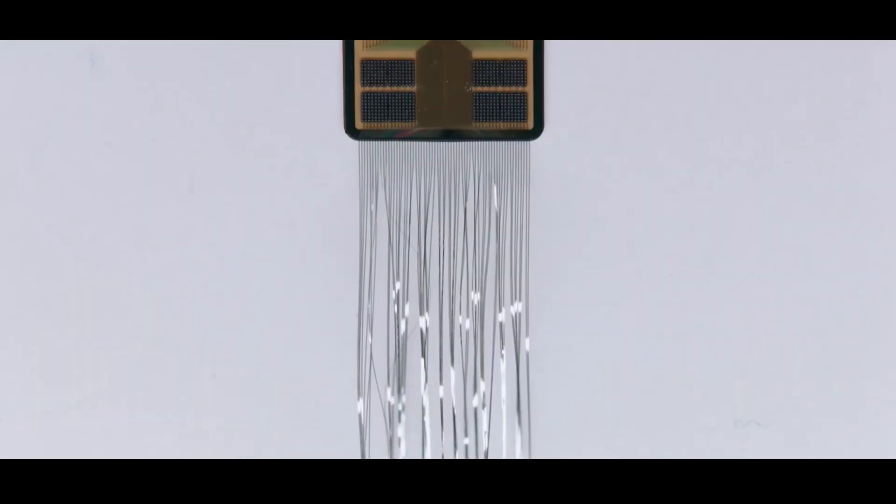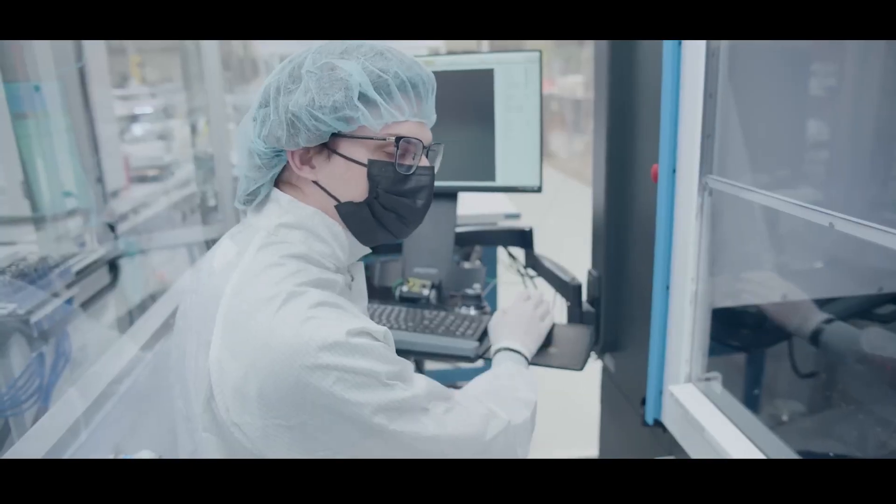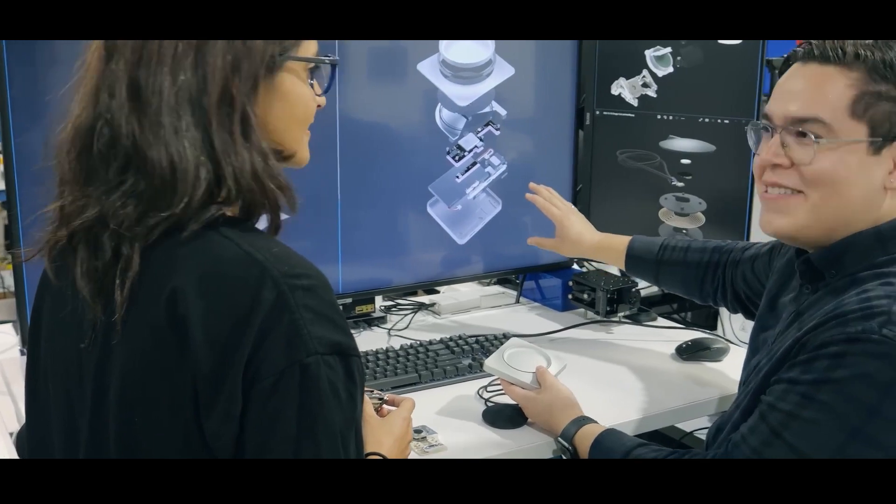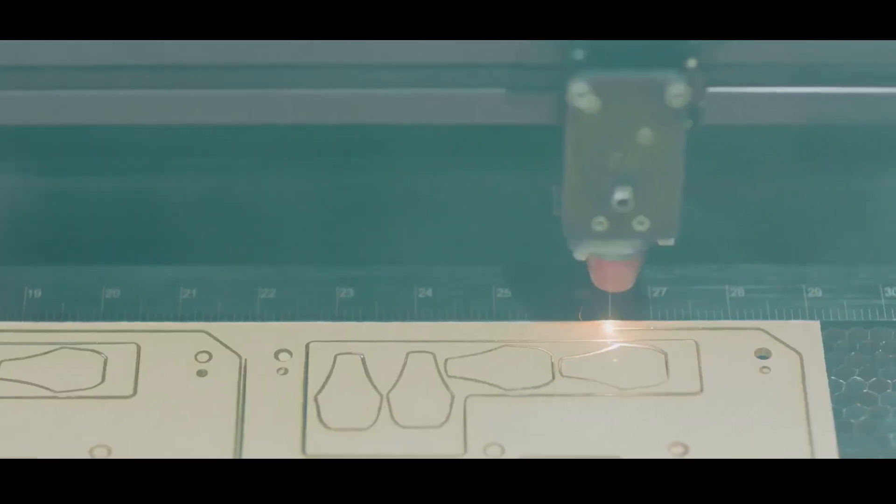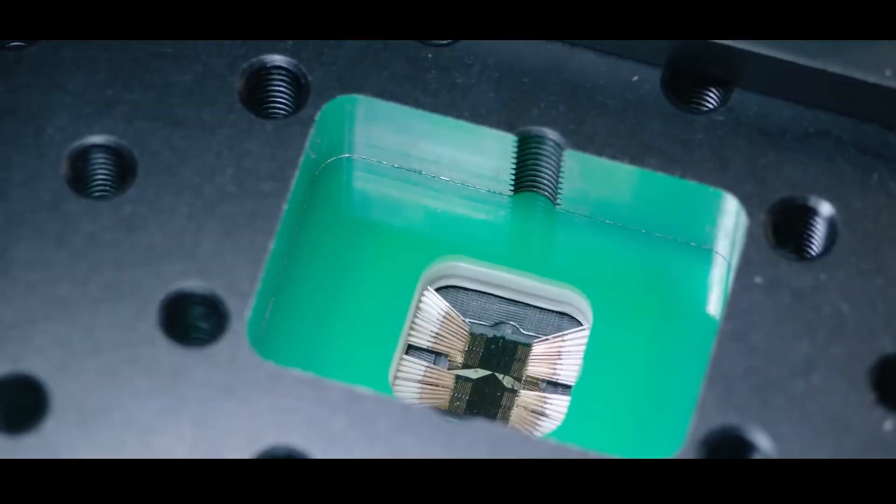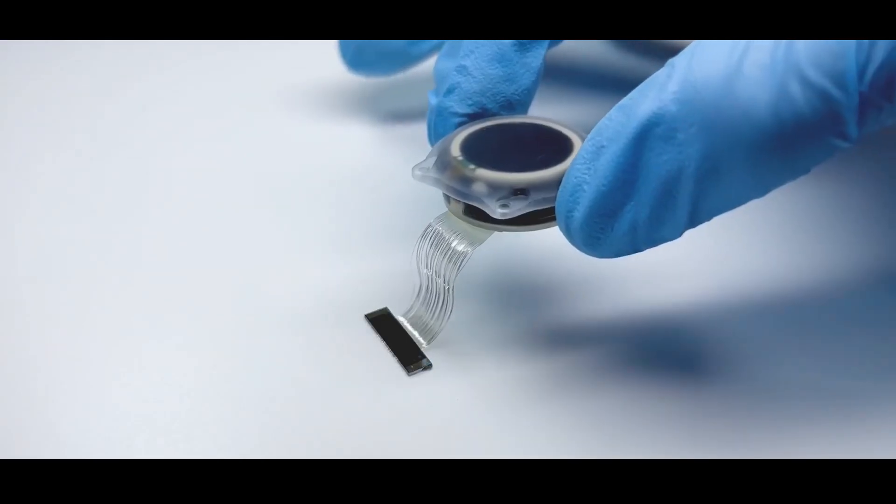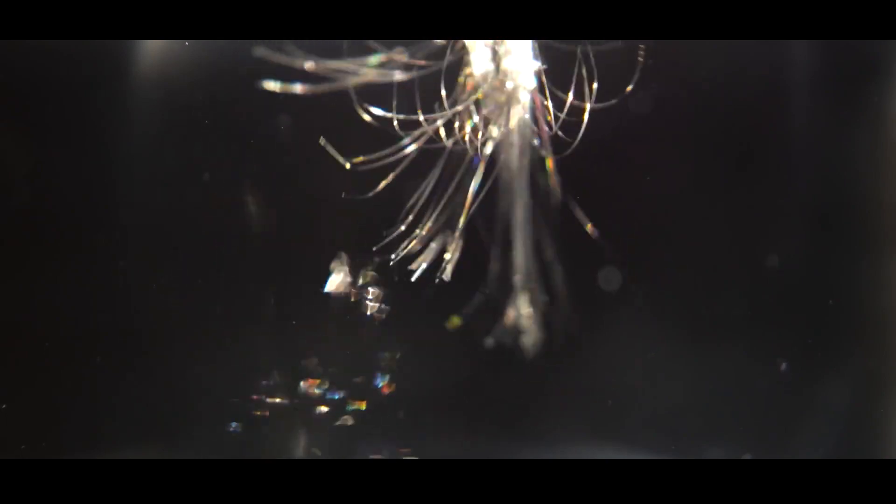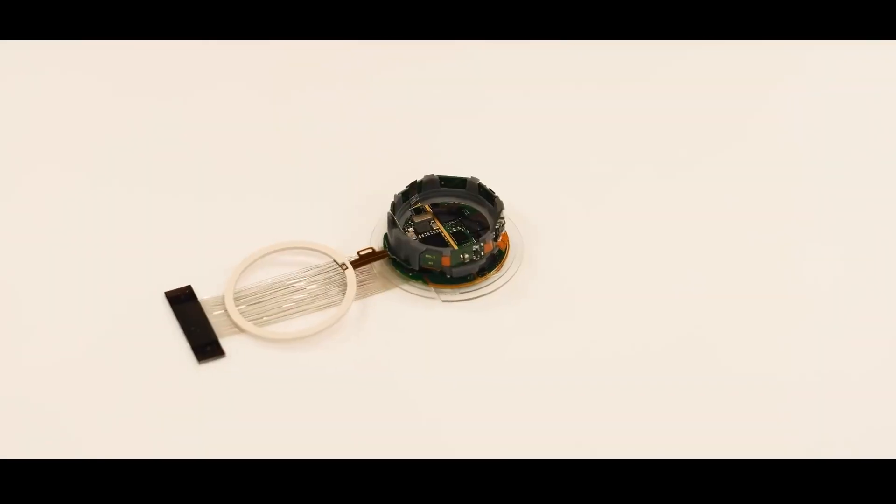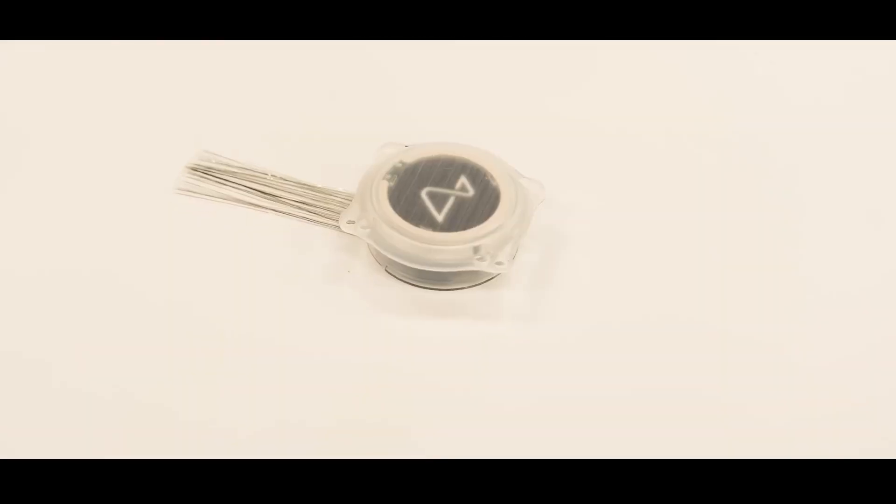We discovered that Neuralink has already made significant strides toward vertically integrating the production of its BCI technology, which means that the company is developing its own specialized internal processes for producing essential elements of the implant procedure right down to the tiny electrode wires and the needles that insert them into the brain tissue, instead of using commercially available parts and components.